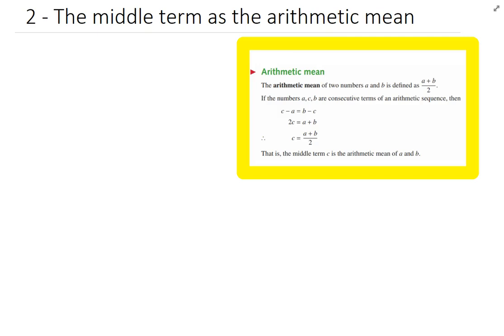So this is a sneaky one, it's the middle term as the arithmetic mean. So what I'm talking about is if I've got three numbers in an arithmetic sequence, let's say 5, question mark, and 11.